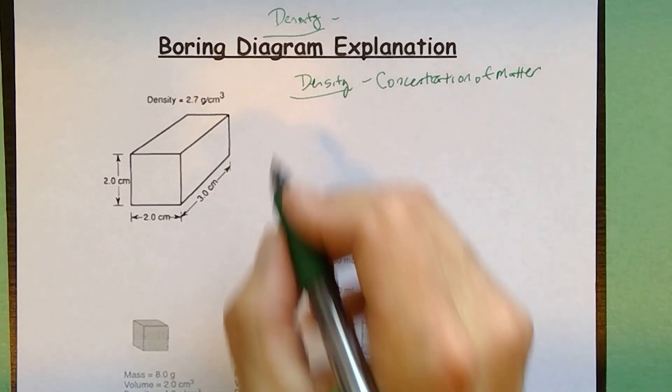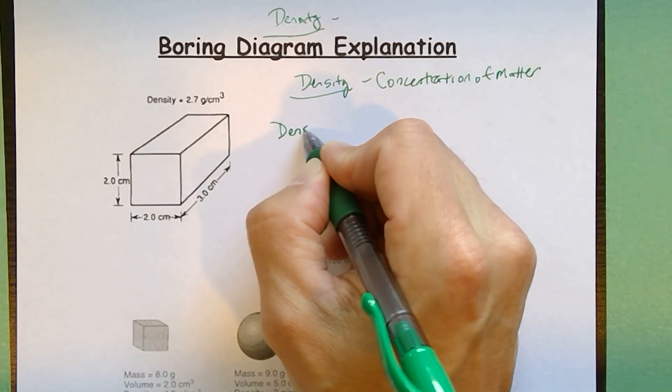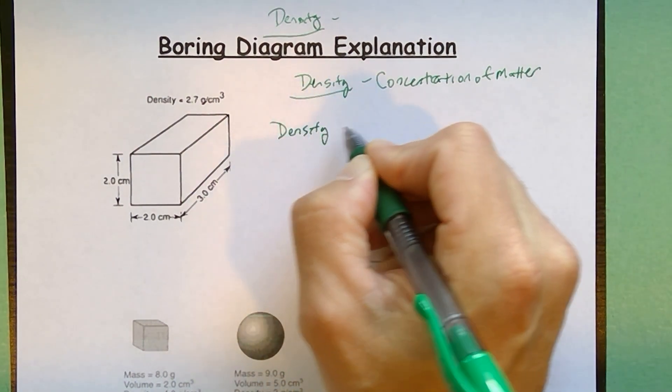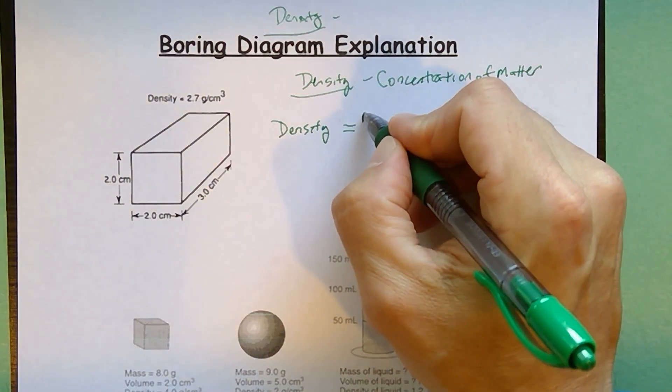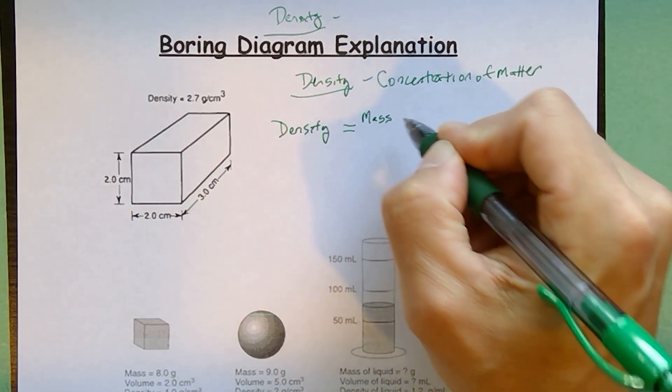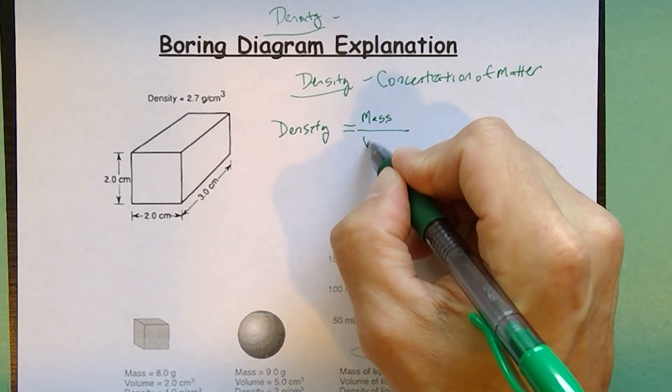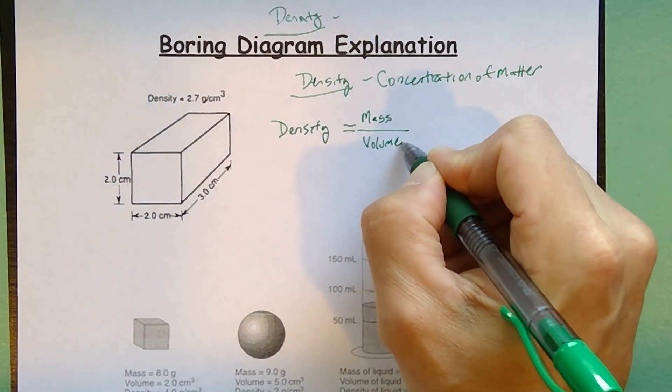Probably the easiest way to define it though is mathematically. If you look at the front page of your earth science reference tables, the formula for density is there. Density, you calculate it by taking the mass and dividing by the volume.